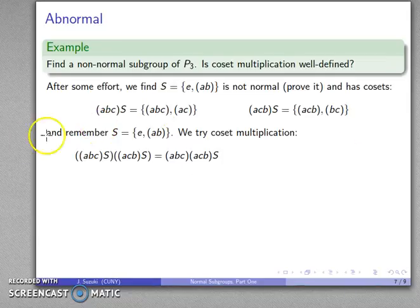We'll try coset multiplication and let's take the product of these two, this with itself. And so our definition of coset multiplication will multiply the representatives (abc) times (acb) and that gives us the set S once again.